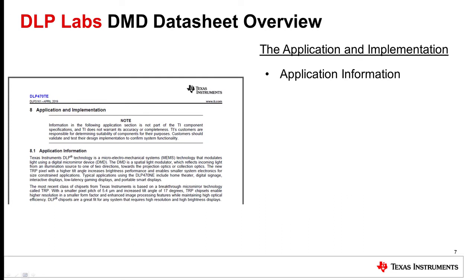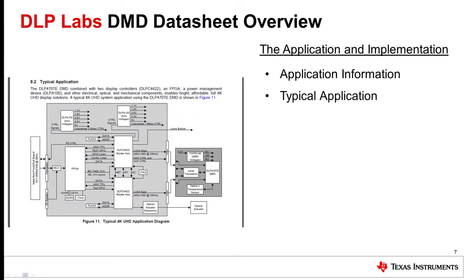Section 8 is the application and implementation portion of the datasheet. Note that this section is informative only. The application information describes in general terms the function of the DMD device. The typical application portion shows a possible application diagram showing the device, along with other components necessary to accomplish a particular function. The diagram may also include other integrated circuits not included in the DLP chipset.